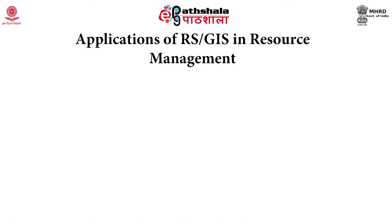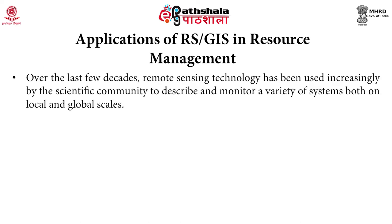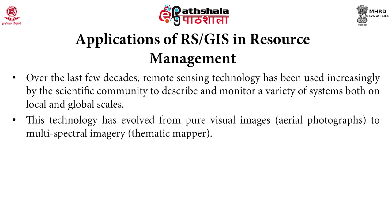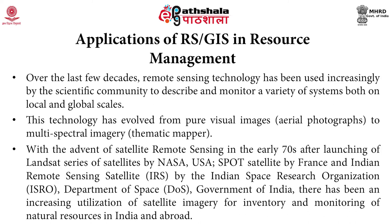Now let's look at the applications of remote sensing and GIS in resource management. Over the last few decades, remote sensing technologies have been increasingly used by the scientific community to describe and monitor a variety of systems on both local and global scales. This technology has evolved from pure visual images — that is, aerial photographs — to multispectral imagery such as the thematic mapper. With the advent of satellite remote sensing in the early 1970s through Landsat by NASA, SPOT satellites by France, and Indian Remote Sensing satellites by ISRO, there has been increasing utilization of satellite images for inventory and monitoring of natural resources in India and abroad.